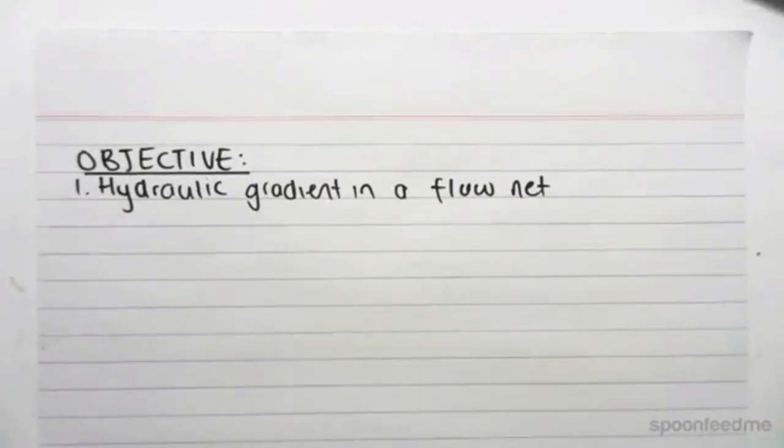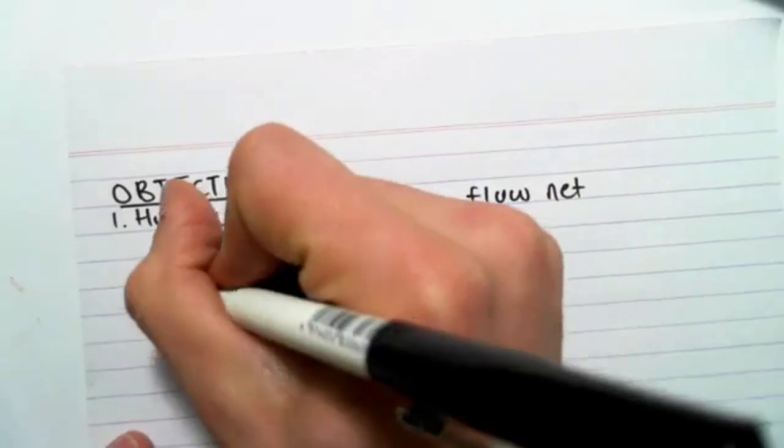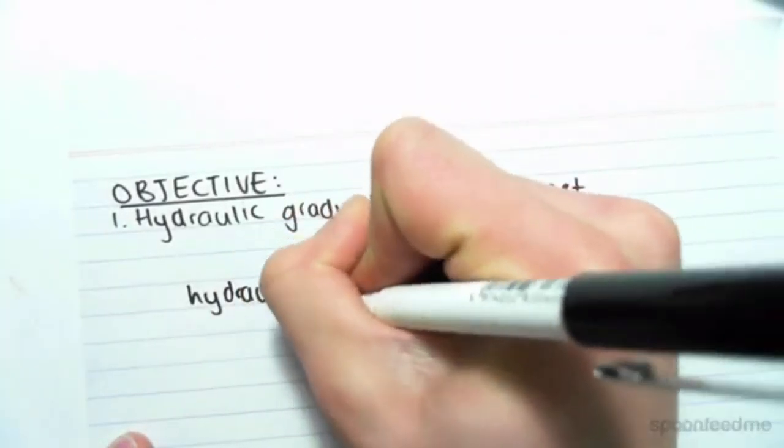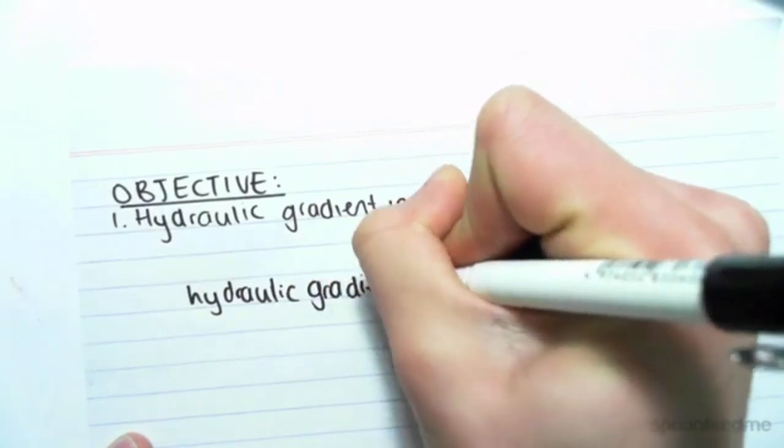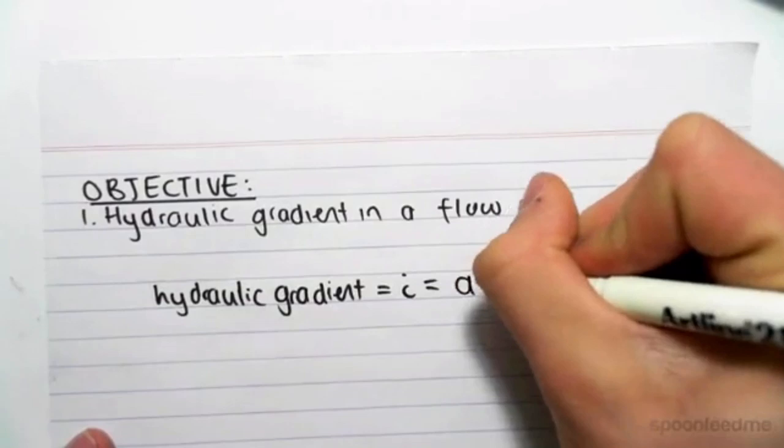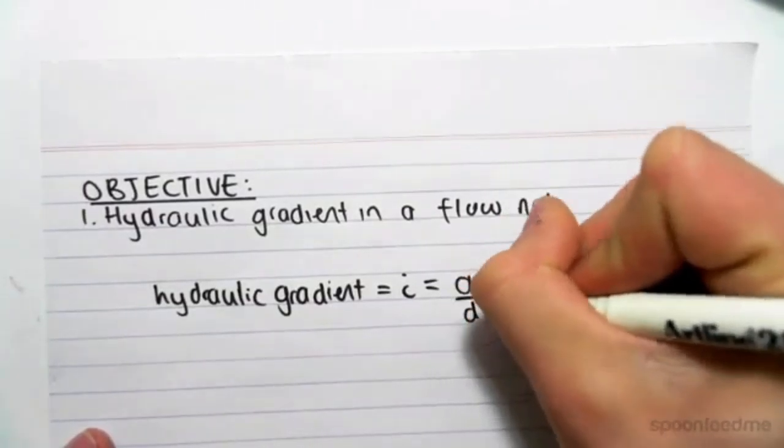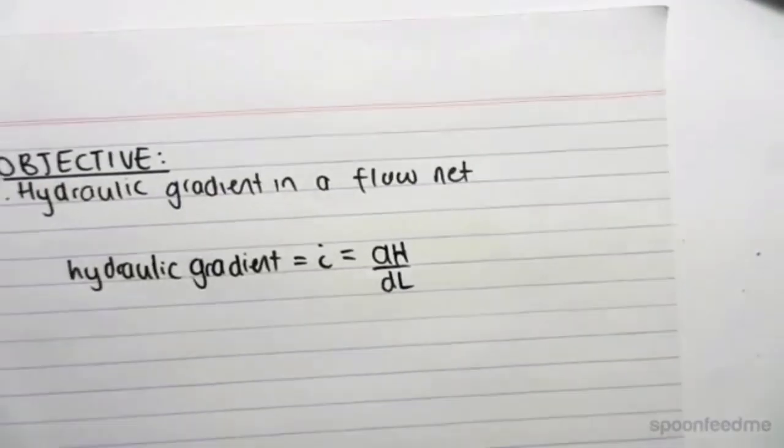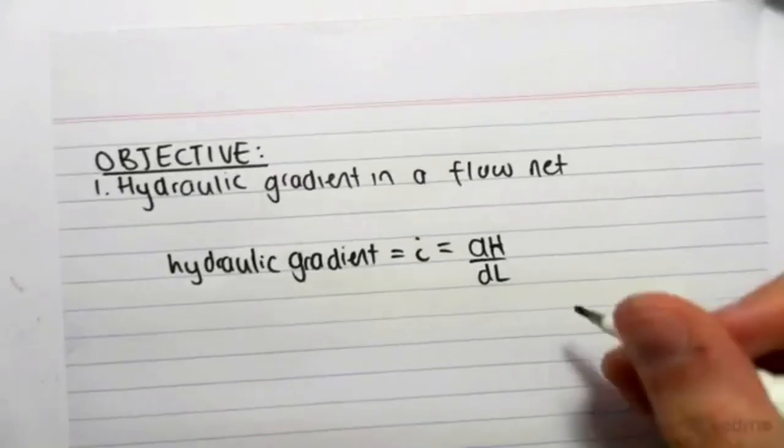In the past, we know that the hydraulic gradient, which is sometimes abbreviated by the symbol i, is equal to the change in head over the change in length. And for the examples we've done in the previous videos, it's been quite easy.